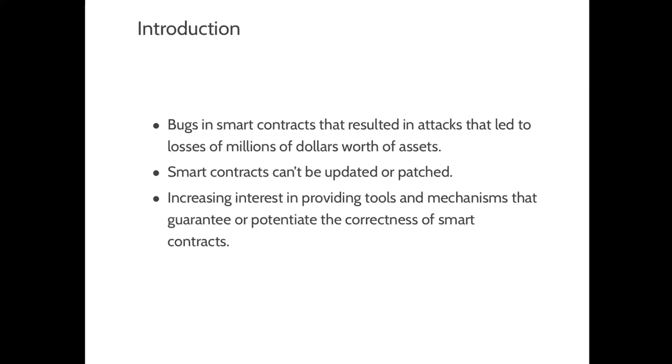There have been reports of bugs in smart contracts that led to losses of millions of dollars worth of assets. Smart contracts are programs embedded in a blockchain transaction. As such, smart contracts can't be updated or patched as transactions in a blockchain should be immutable. With this, there has been an increasing interest in providing tools and mechanisms that guarantee or potentiate the correctness of smart contracts.